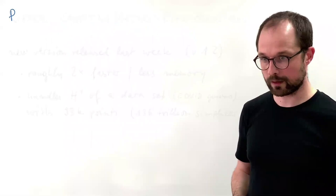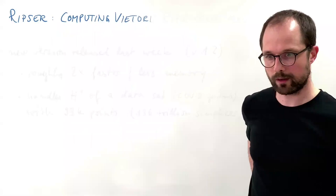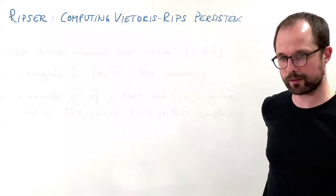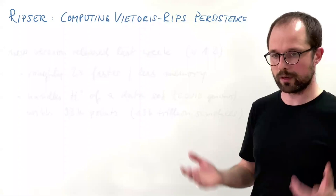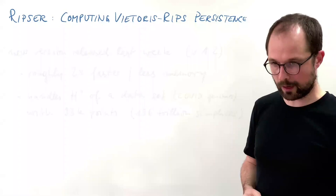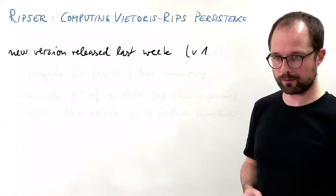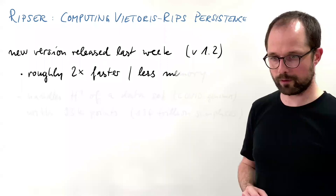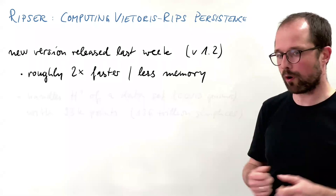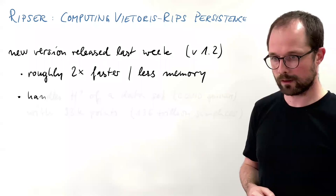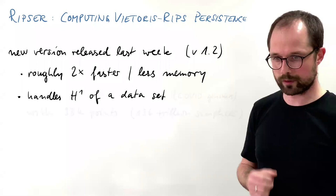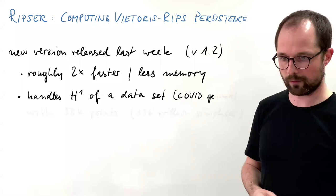I want to start with an advertisement. This is RIPSA, which some of you might know is software I wrote for computing barcodes and persistence for Vietoris-Rips filtrations. You have a metric space, you have geometric data, and you look at the data at various scales, identifying connectivity in various degrees using homology and complexes. I put up a new version last week — version 1.2. It's about twice as fast as before and uses roughly half the memory due to a more efficient implementation detail.